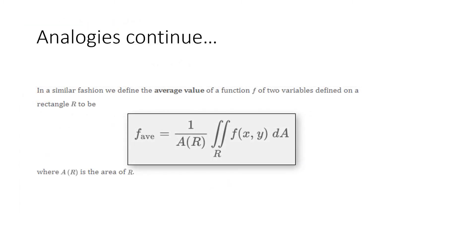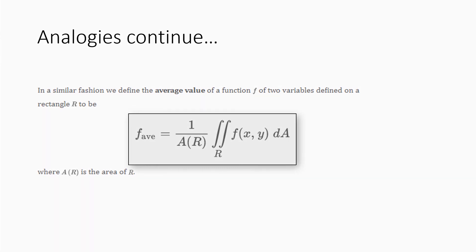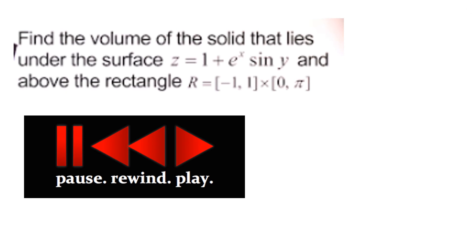Now, the analogies do continue. Back in the day, we said that the average value of a function over an interval was the integral of the function over the interval divided by the length of the interval. The analogy here is that the average value of a function F of X, Y of two variables over a rectangle R is the double integral over the rectangle R F of X, Y dA divided by the area of R. That previous one was the one that the meteorologist would have used to find the average rainfall, perhaps, over a planar area.